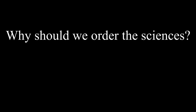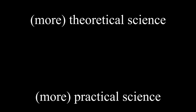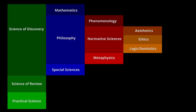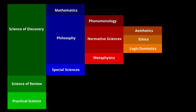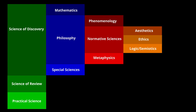Let's return to the basic question: why should we order the sciences, and what does it mean that science has an order? The more general and theoretical sciences provide principles and concepts for the more practical and basic sciences. We can now apply this to the architectonic. Mathematics is the most general science, meaning it can provide useful tools and theoretical concepts to all other sciences — special sciences like physics, biology, chemistry, and psychology all use mathematics, and even philosophy uses mathematics, especially in logic.